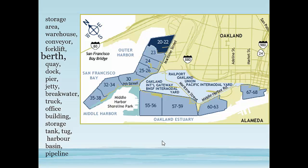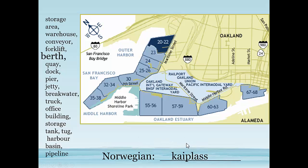A berth — that's right. It's not like giving wide berth, that's spelled b-i-r-t-h. No, a berth — that is a numbered area on a quay where you will dock your ship, moor your ship. So in Norwegian we call that a kaiplass — a numbered place.